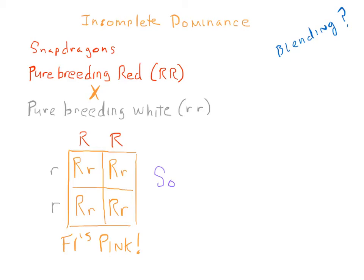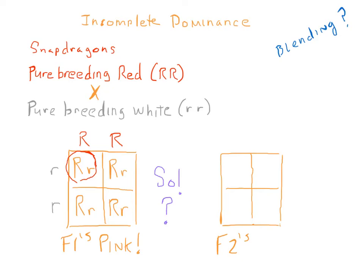So, what's going on here? Is this really a case of blending between two forms of a gene? In order to understand incomplete dominance, we will create the next generation by crossing two of the F1s. So let's set up our Punnett square like this.